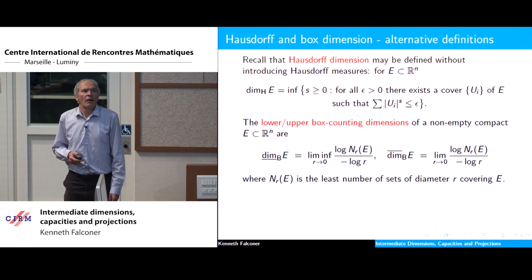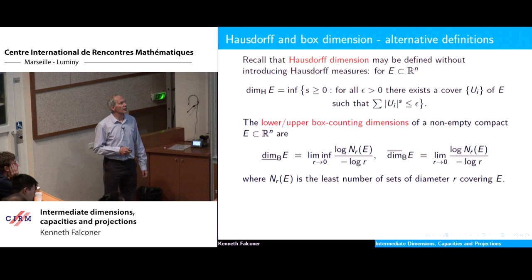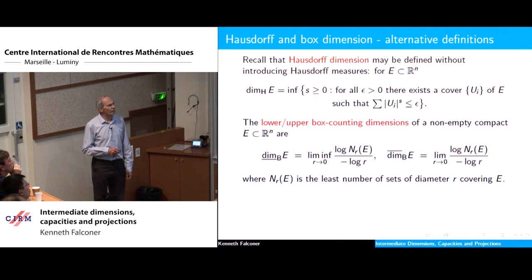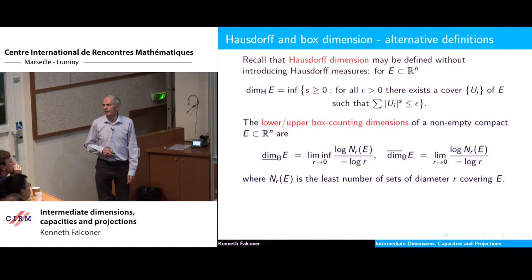We can define the lower and upper box counting dimensions by taking the lower and upper limits of the ratio of the log of N(r, E) — the least number of sets of diameter r that can cover E — divided by minus log r. So if the box dimension is d, that means N(r, E) is roughly r to the minus d. For most of the sets we're going to be talking about, the lower and upper variants are the same, so just think of box dimension and don't worry too much about lower and upper limits.